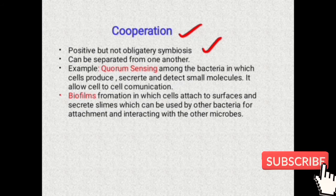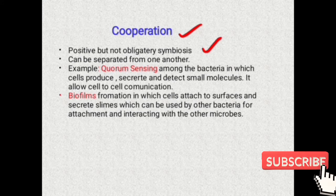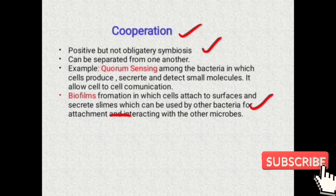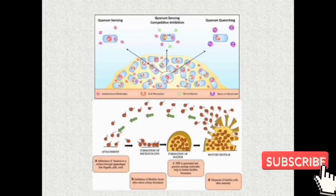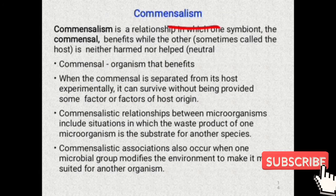The next is cooperation. In cooperation, the association is positive but not obligatory — unlike mutualism, we can separate one organism from the other and they live easily. Examples include quorum sensing and biofilms. In quorum sensing, bacteria produce chemicals which allow cell-to-cell communication. In biofilm formation, the first colonizer bacteria produce slimes which provide opportunity for other microorganisms for attachment and interaction.